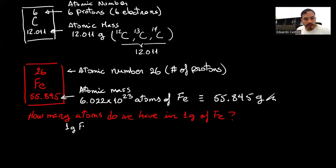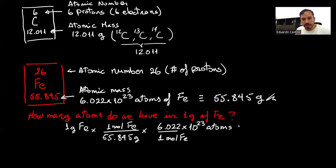To answer this question is actually very simple. One gram of iron, we multiply by the atomic mass. We know that one mole of iron has 55.845 grams, and at the same time, one mole of iron has 6.022 times 10 to the 23 atoms. So one divided by 55.845 and multiplied by 6.022 times 10 to the 23 atoms will give a final value of 1.078 times 10 to the 22 atoms.